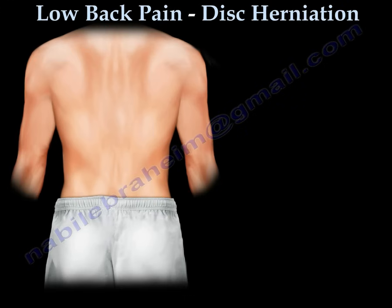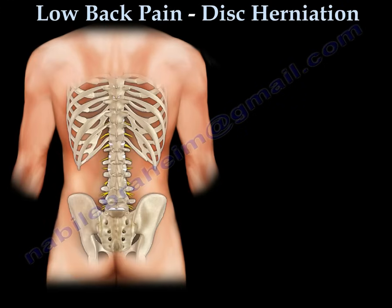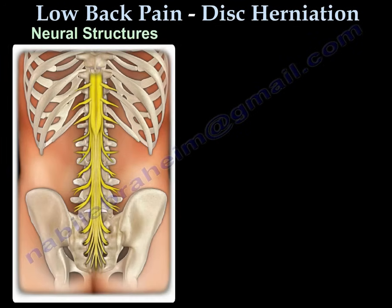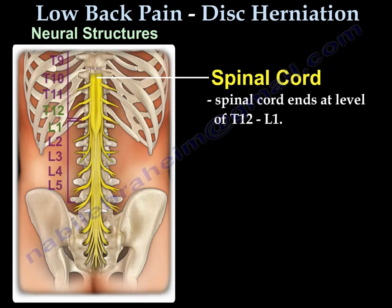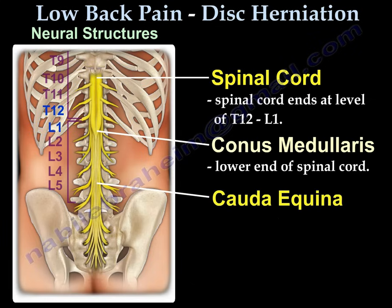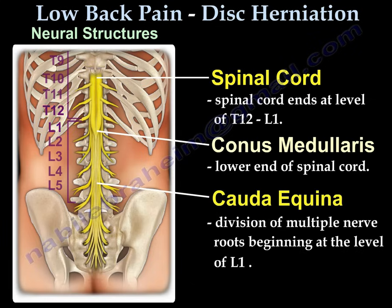This is a low back pain disc herniation video. The spine has bony vertebrae separated by discs. The neural structures include the spinal cord, which ends at the level of T12-L1, the conus medullaris, which is the end of the spinal cord, and the cauda equina, which is a collection of nerve roots that usually begins at the level of L1.